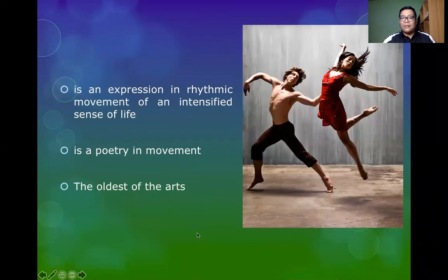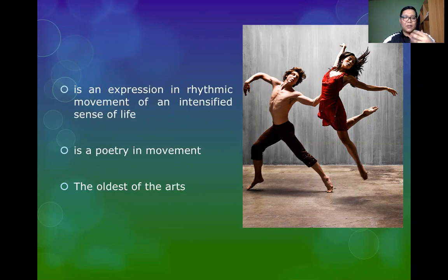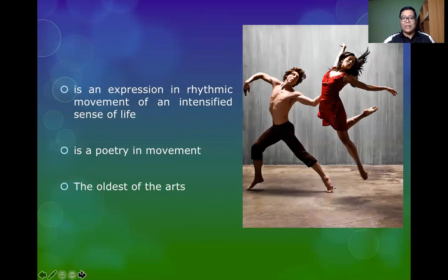Let us define first what dance is. Dance is an expression in rhythmic movement of an intensified sense of life. This definition draws so much meaning from the realities of life by representing those realities through the rhythmic movement of the body. Dance is also considered as a poetry in movement, and it is the oldest of the art forms — even older than painting, sculpture, and architecture.